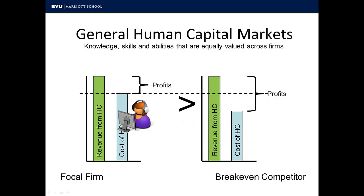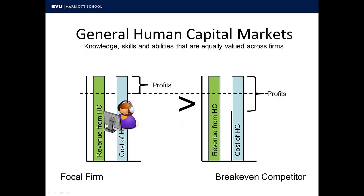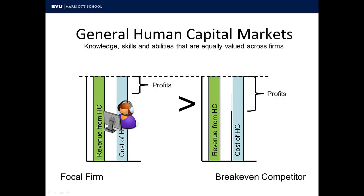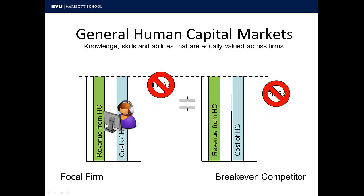Workers will follow the higher incentives, but eventually the firms will bid incentives up so that the worker has no better outside option. At this point, the costs of human capital are equivalent to the value from human capital, and the economic profits from human capital are essentially zero. It should be very difficult for any firm to realize greater economic profits than rivals in this situation.